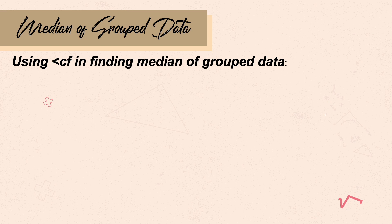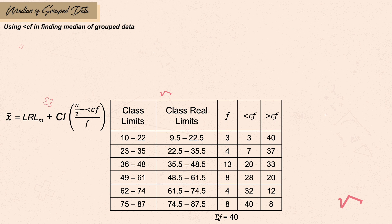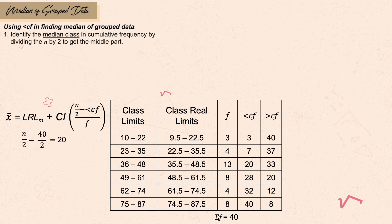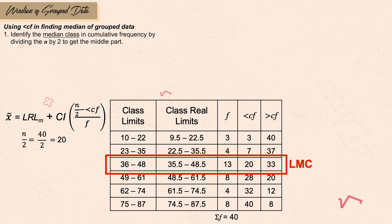Next is the median. I will be discussing two methods for computing the median of grouped data: one uses less cumulative frequency and the other uses greater cumulative frequency. We start with less cumulative frequencies. Step one: identify the median class by dividing n by 2. With n equal to 40, dividing by 2 gives 20. Locate the median class in the less cumulative frequency column — in this case there is an exact value of 20 in that column, so that is the lower median class.